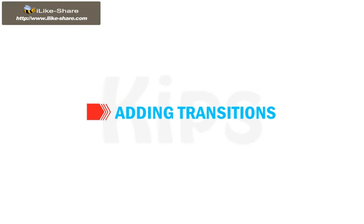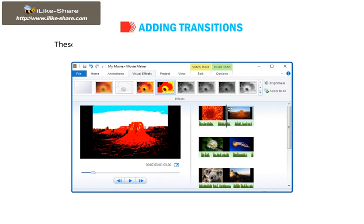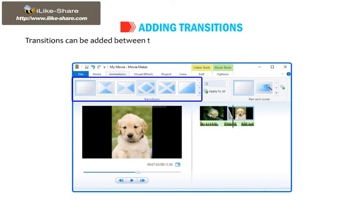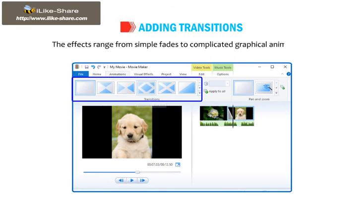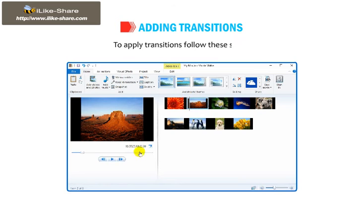Students, now let me tell you how to add transitions. Transitions are applied to add visual effects to the movie. They are used to add connectivity to the consecutive scenes of a movie. Transitions can be added between two images, video clips, or titles and are applied to the beginning of the selected clip. The effects range from simple fades to complicated graphical animations. To apply transitions, follow these steps.